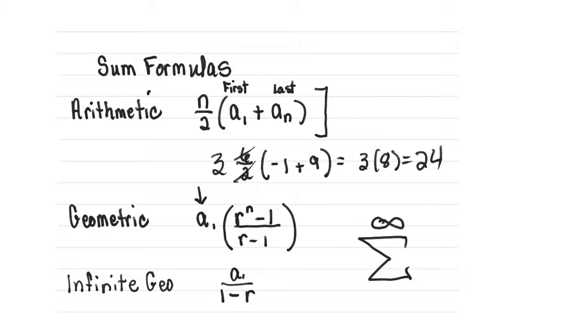If the sequence is arithmetic, then you'll put in the number of terms n divided by 2, and multiply that by the first term plus the last term.